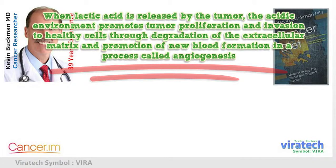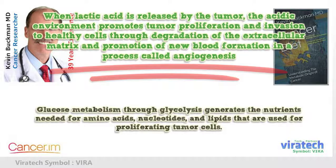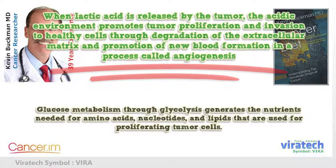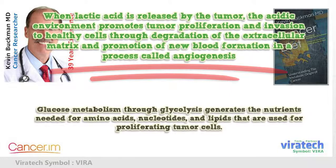In a process called angiogenesis, glucose metabolism through glycolysis generates the nutrients needed for amino acids, nucleotides, and lipids that are used for proliferating tumor cells.